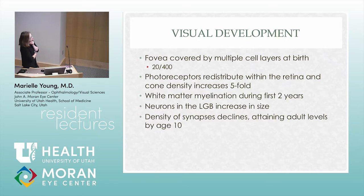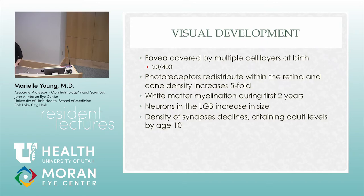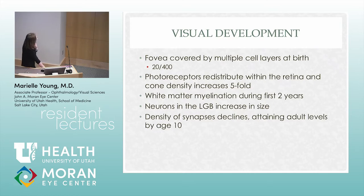When you're born, your fovea is covered by multiple cell layers, which is problematic when sending young kids for VEPs because they don't have a normal fovea yet. The photoreceptors move around after birth and all the cones localize to the foveal area. During the first two years of life, the white matter myelinates and the neurons in the lateral geniculate nucleus increase in size. The brain and eyes keep developing until about age 10.